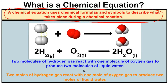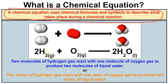If we take a look at this example here, we can visually represent what's going on: we're taking two molecules of hydrogen gas and reacting it with one molecule of oxygen gas, and they're going to produce two molecules of water. We can also say this as two moles of hydrogen gas reacting with one mole of oxygen gas to produce two moles of liquid water.